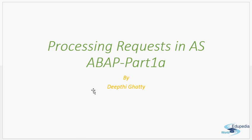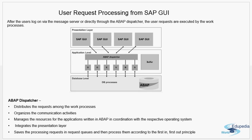Hello everyone, thank you for watching Edupedia World videos. In our last topic we discussed about the SAP NetWeaver system architecture. Now we'll go into further details and discuss the work process architecture as well as the different types of work process available in an ABAP system. First we'll see what an SAP instance contains, then an overview of a work process, and later the different types of work process in the ABAP server.